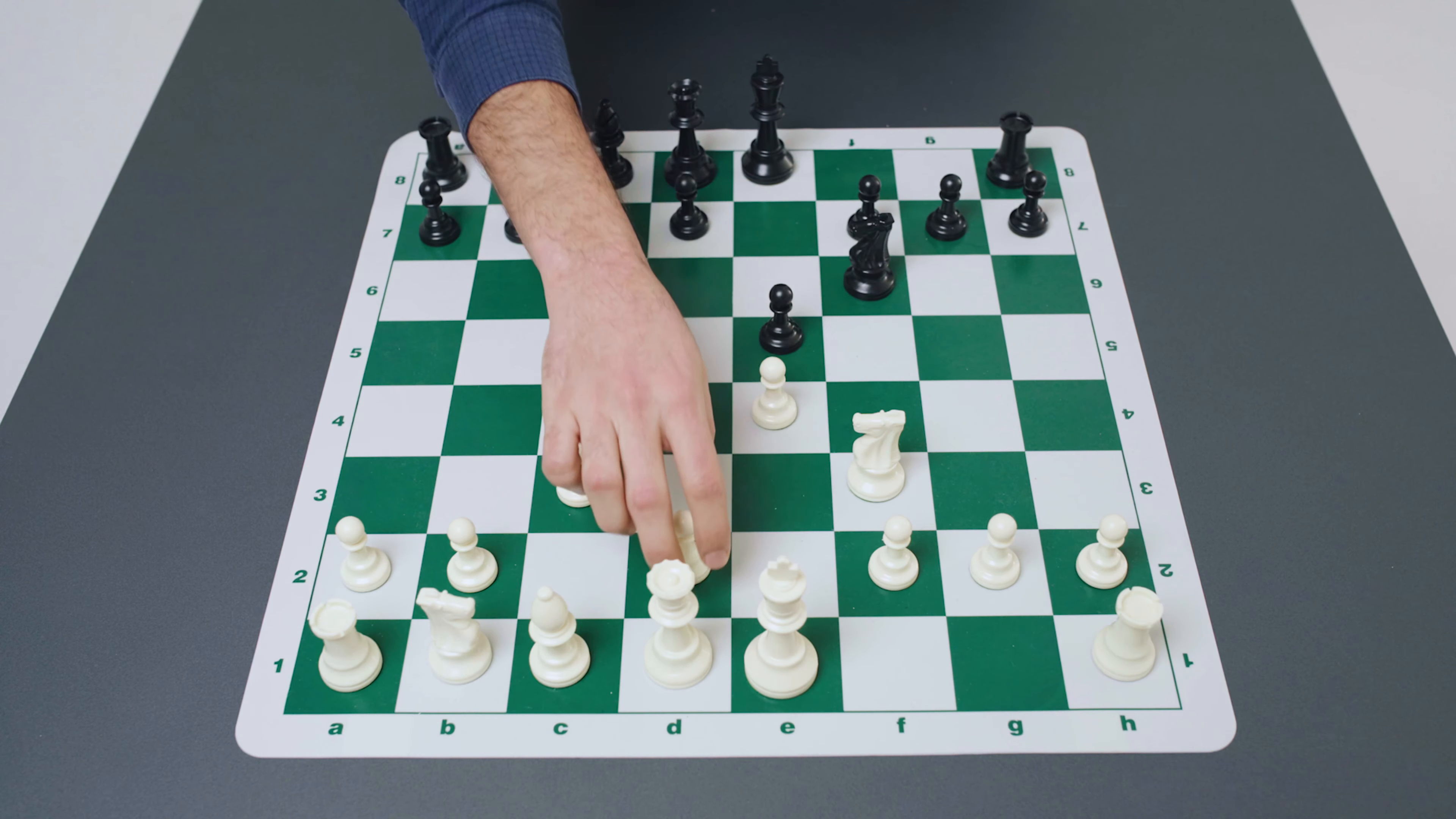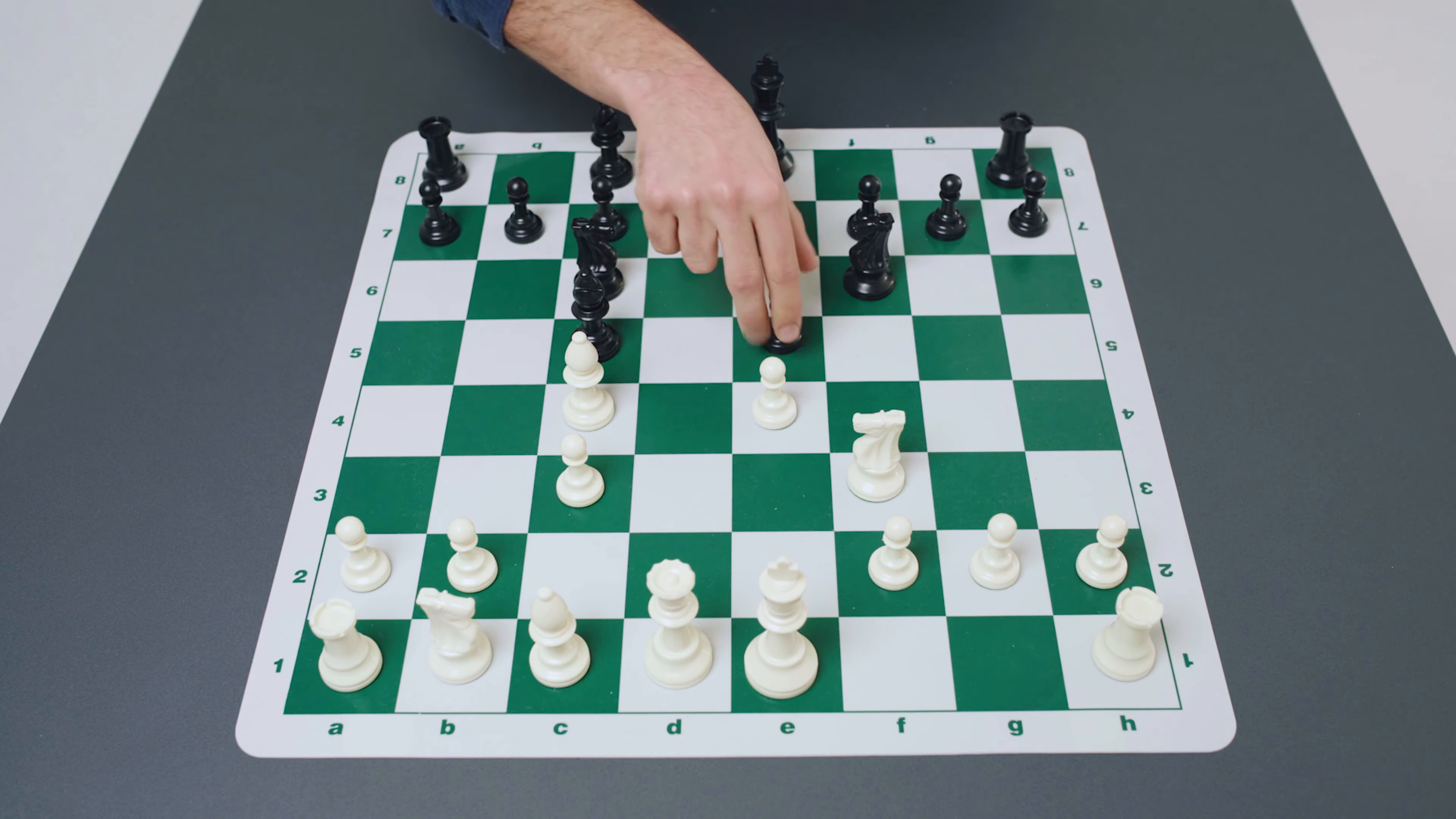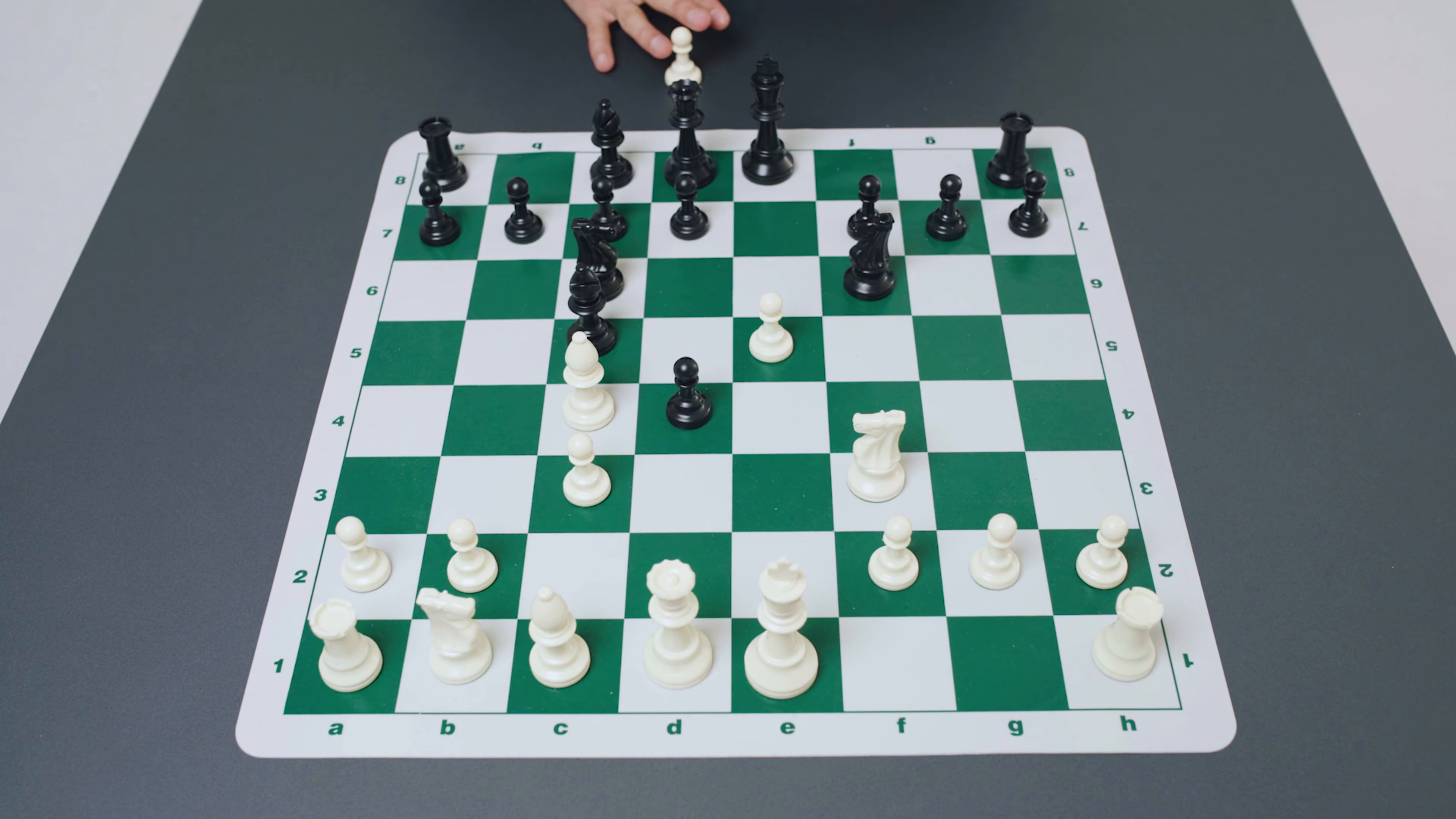Now to go back to the original move that we discussed, bishop to c5, this is the classical variation. From here we will examine various systems. So traditionally white played the move pawn to c3 and the intention with this move is to play the pawn to d4. Black has various ways of meeting this move but the most principled reply is knight to f6, ignoring the threat of pawn to d4, confident that black will be able to deal with this move effectively.